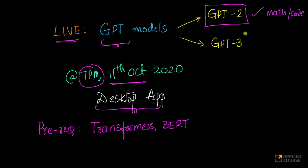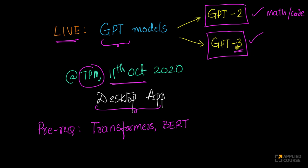Once we complete GPT-2, we'll go and understand the GPT-3 research paper and some of the code related to it. GPT-3 has no publicly available code — there is only an API access to it. But we'll understand how GPT-2 is different from GPT-3, and what are the fundamental innovations because of which GPT-3 is performing much better than GPT-2 and other deep learning models.